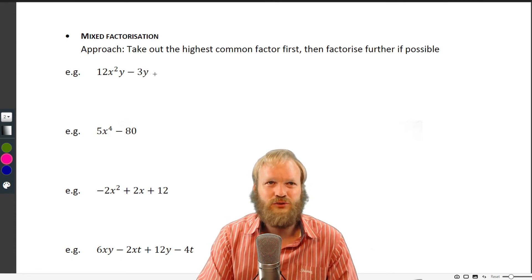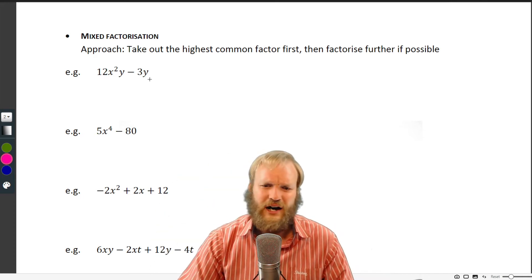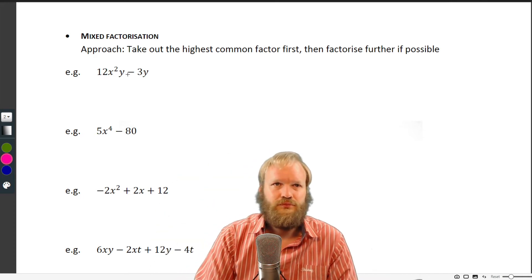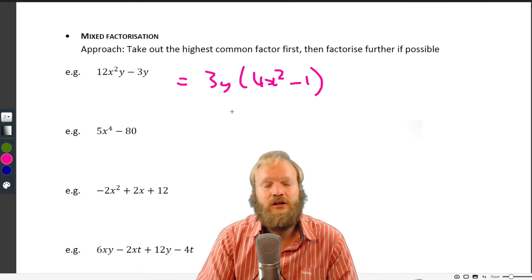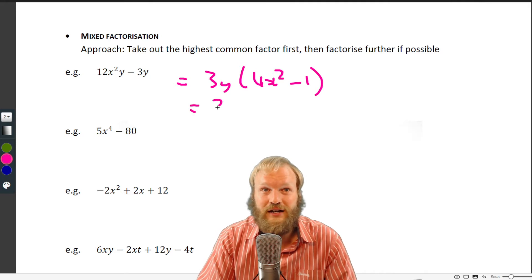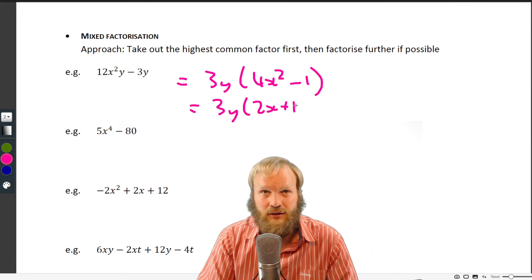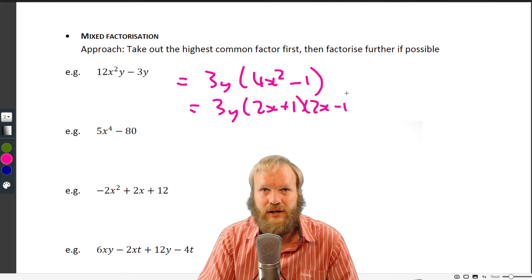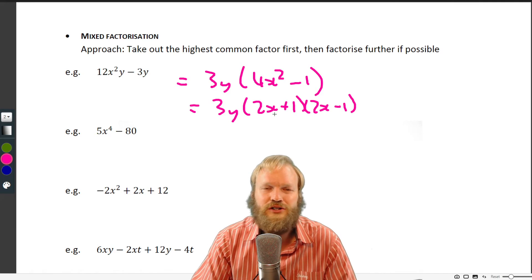So 12x²y - 3y. What's our highest common factor? Well, we've got 3y, so we go: cool, 4x² - 1. Oh look at that, that looks like a difference of two squares: 2x + 1, 2x - 1. Can we factorize further? No we can't, so we leave it at that.